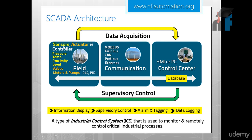Typical sensors include pressure sensors, temperature sensors, proximity sensors, and level sensors. Actuators can be valves, motors, or pumps. Controllers include PLCs and PIDs — PIDs typically for dedicated temperature control, PLCs for step and analog control. Communication protocols include Modbus, Fieldbus, Profibus, and Ethernet, by which field devices interact with the control center. The control center uses HMIs or PCs to control field devices via the communication network and acquire data.